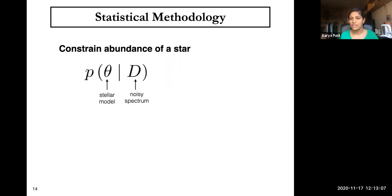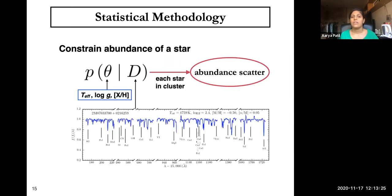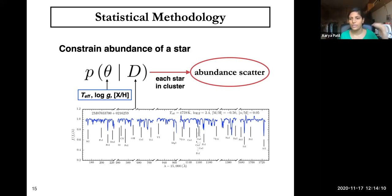Now I'll get into the statistical methodology. We'd like to constrain the abundance of a single star by constraining the posterior distribution — the probability of the stellar model given a noisy spectrum. We take this posterior for each star in the cluster and get a scatter of abundance. The model includes parameters like effective temperature, gravity (log G), and a bunch of abundances. Here I've shown an example spectrum, which is a function of wavelength. This is continuum normalized, meaning the blackbody radiation curve has been removed, and we observe the variations from this continuum.